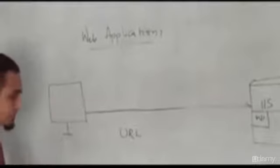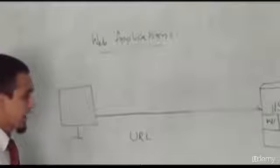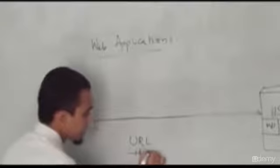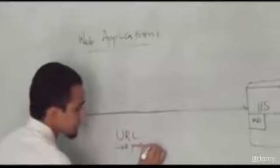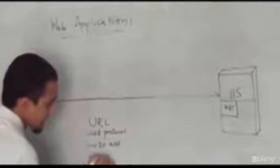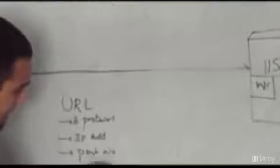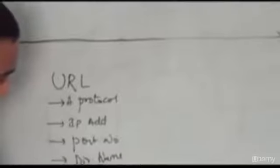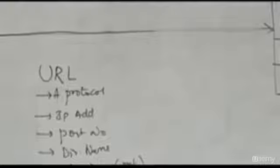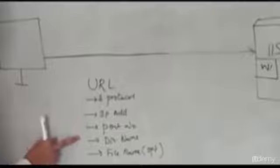What does a URL contain? A URL contains a protocol, IP address, port number, directory name, and a file name which is optional. So the main things a URL contains are: protocol, IP address, port number, and a directory name.